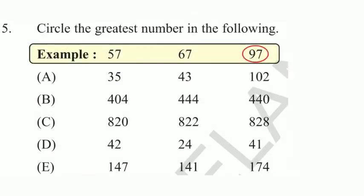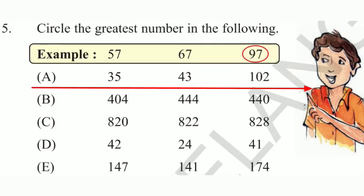Next, A. In this, 35, 43, 102. Which is greatest? Yes. 102 is the greatest number.